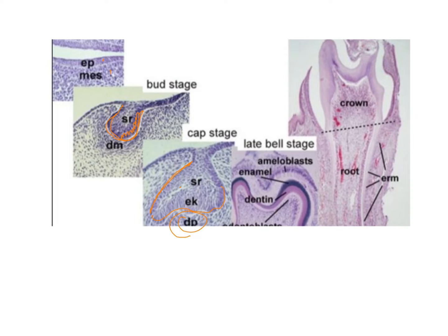However, before the ameloblasts lay down the enamel, they induce the cells of the dental papilla to differentiate into odontoblasts. These odontoblasts lay down the dentine first. Because of this laying down of dentine, the inner enamel epithelium differentiates into ameloblasts which then lay down the enamel. That is the reason why the first tooth structure to be formed is the dentine and not the enamel. Also visible here is the enamel knot, which is basically a reservoir of dividing cells.